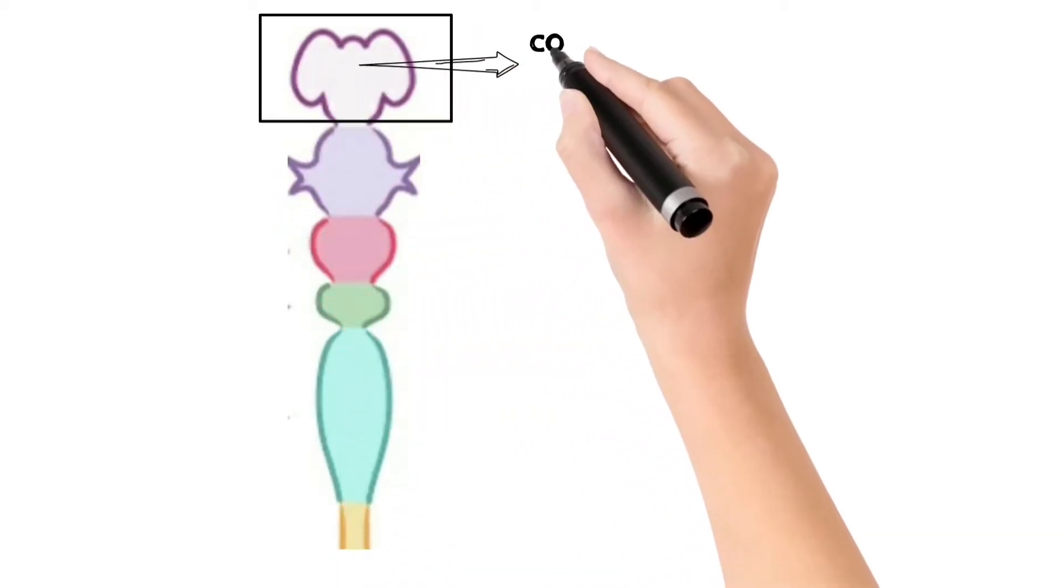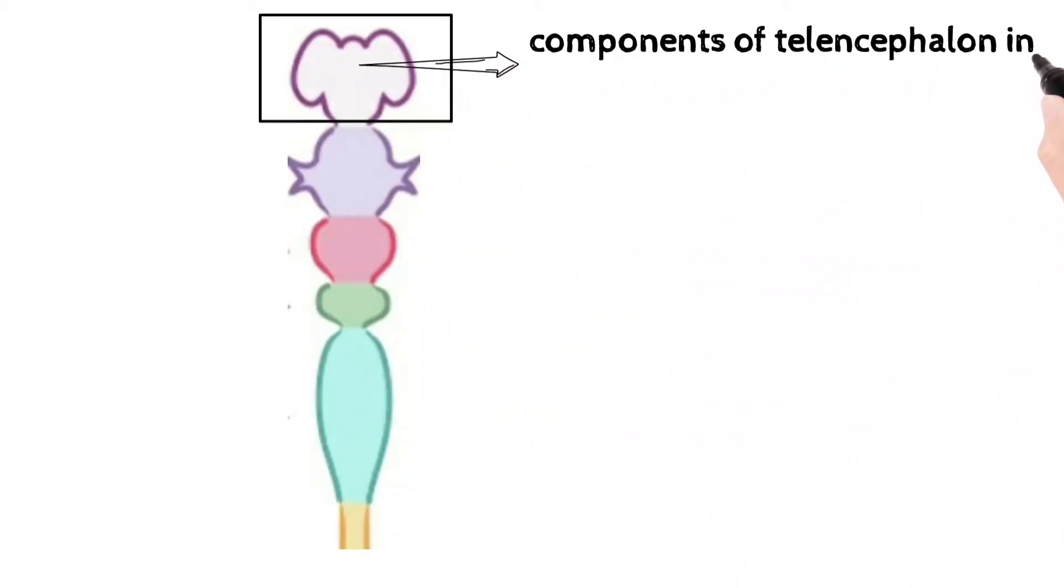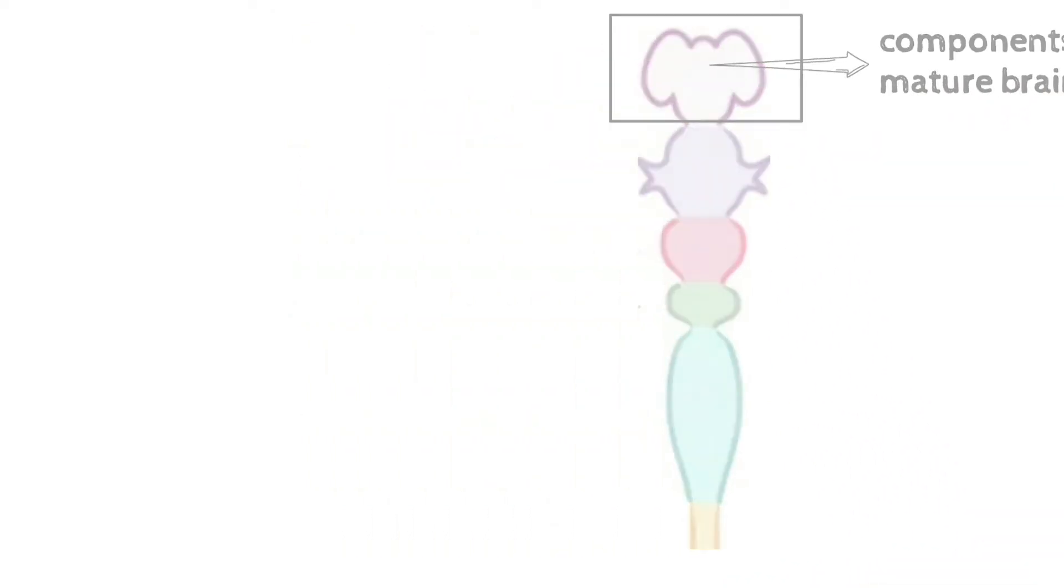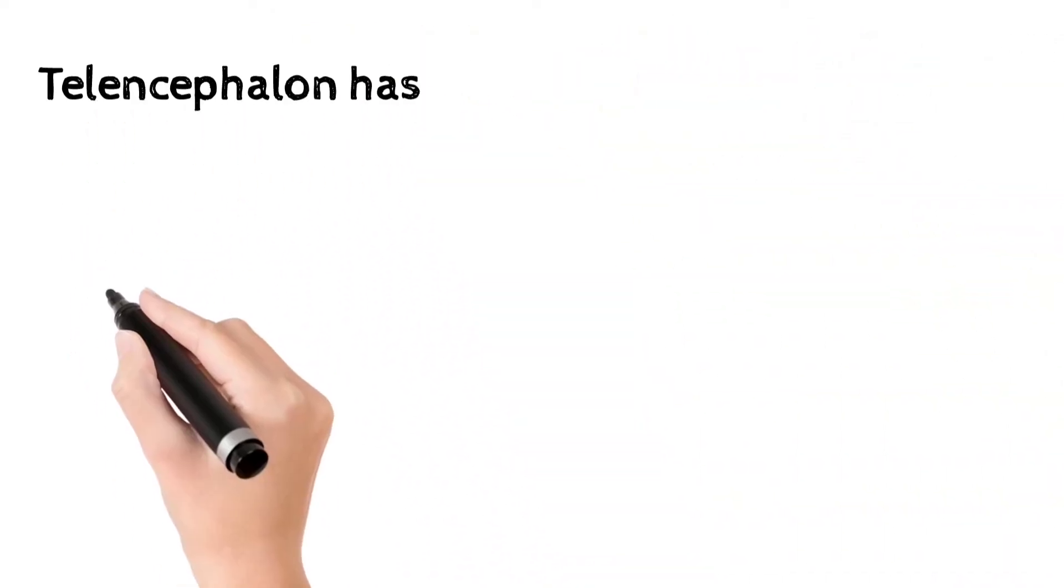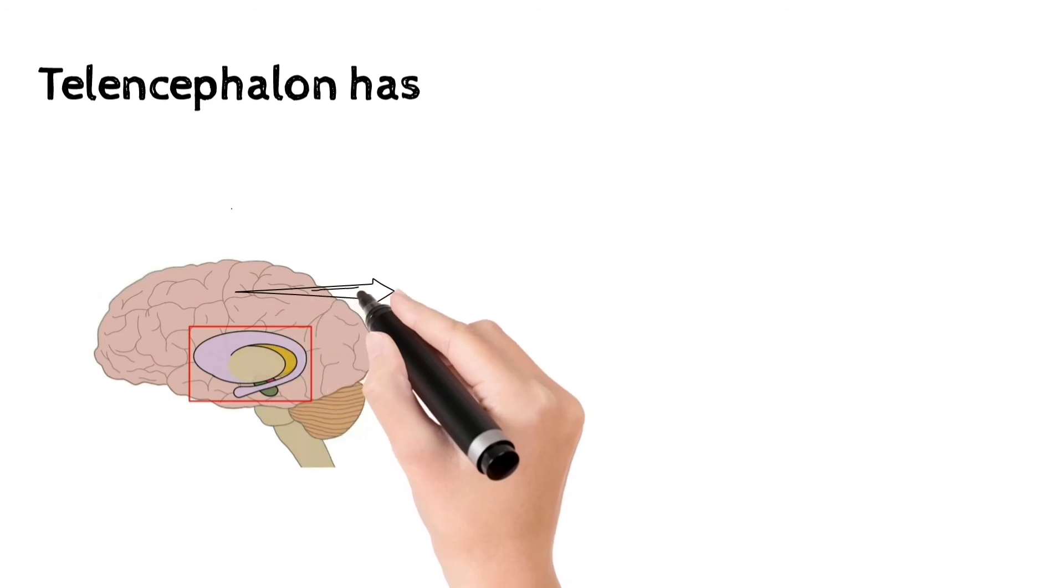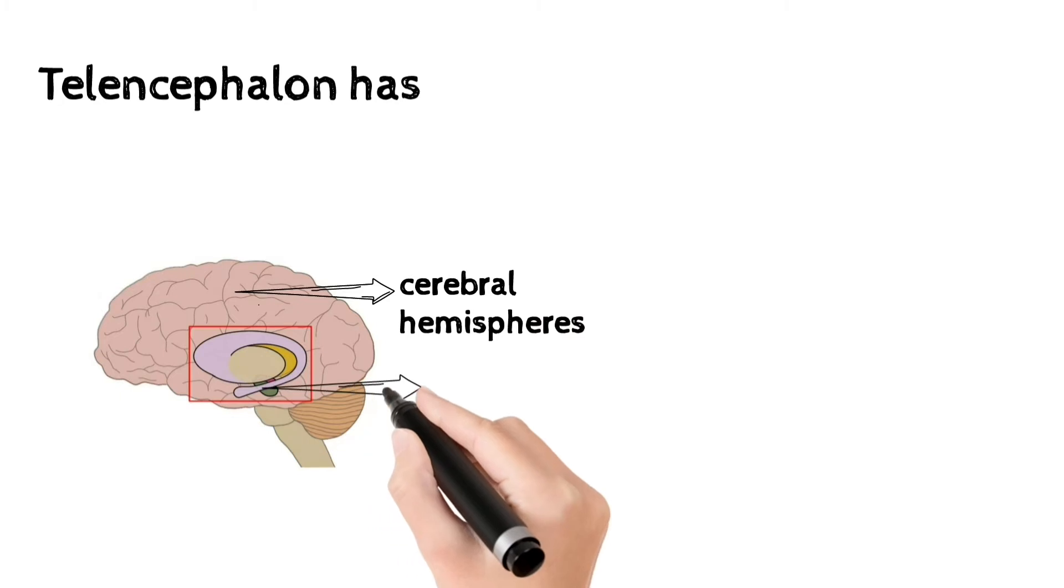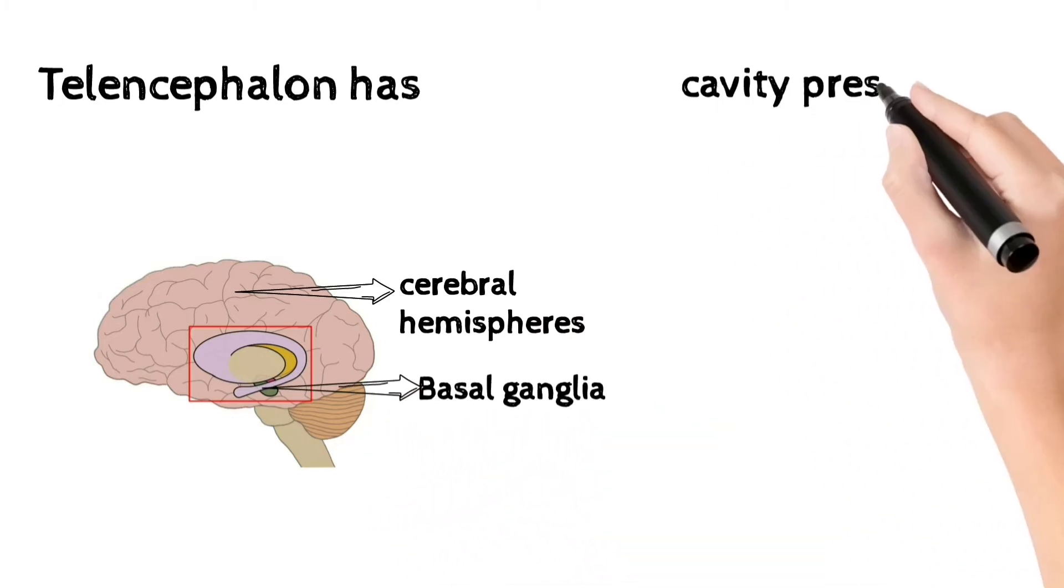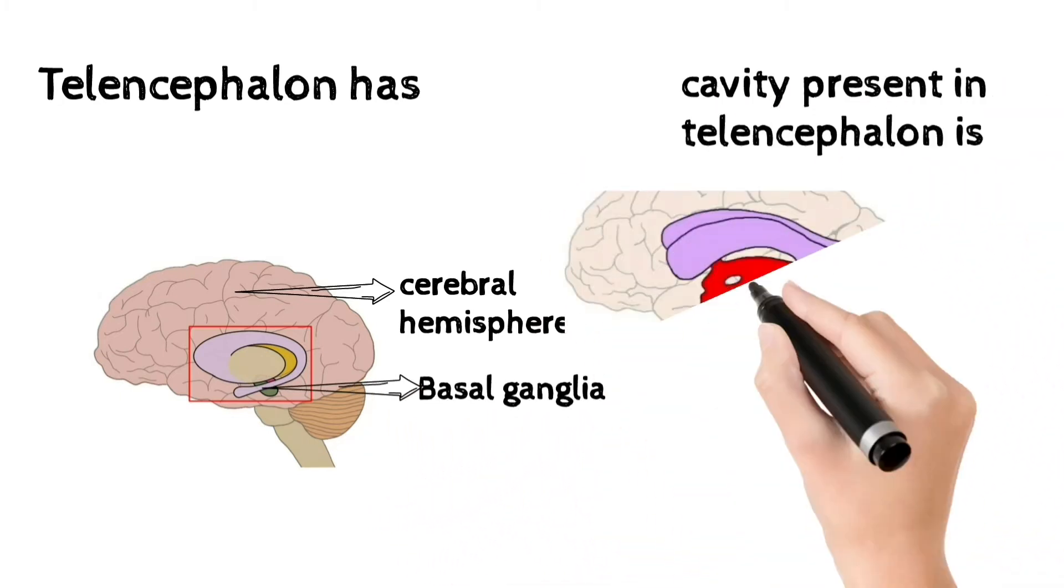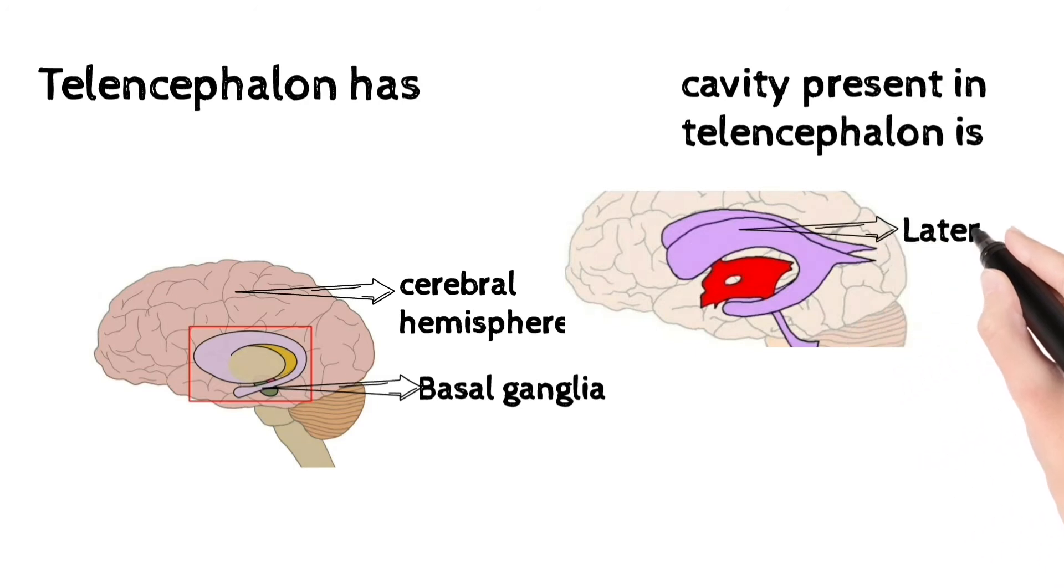First we discuss components of telencephalon. Telencephalon has cerebral hemispheres and basal ganglia. Cavity present in telencephalon is lateral ventricle.